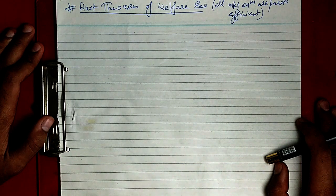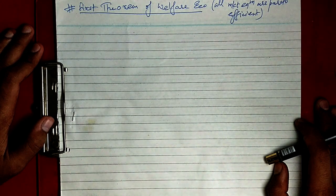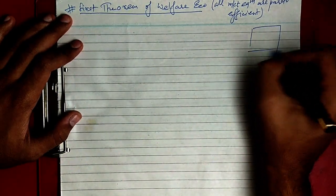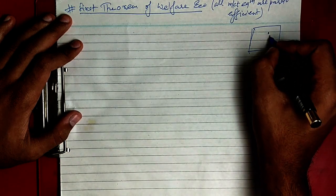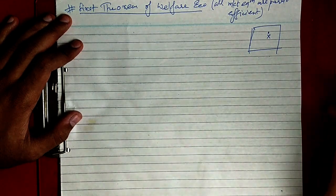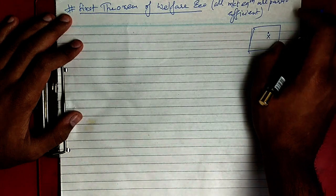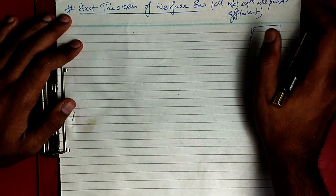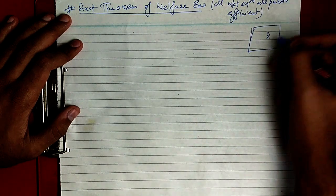To say that a market equilibrium is not Pareto efficient implies that there is some other allocation which is feasible and is preferred by both persons. In the Edgeworth box, let x be the market equilibrium which is Pareto efficient, and we assume there is some allocation y which is also preferred over x.